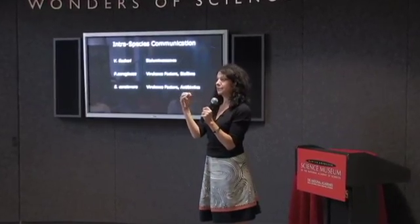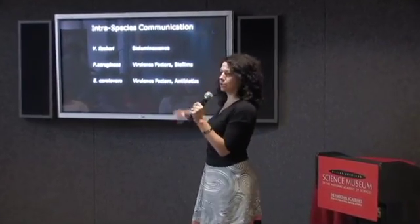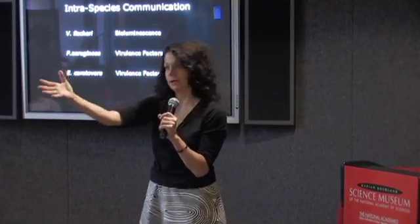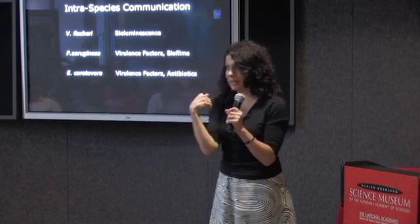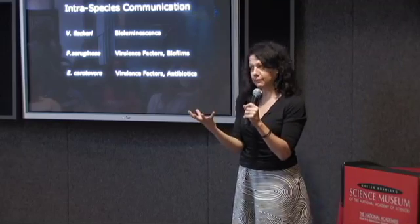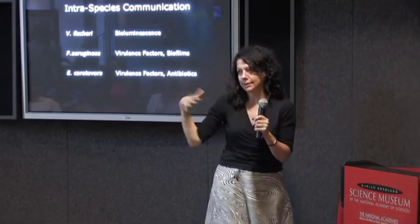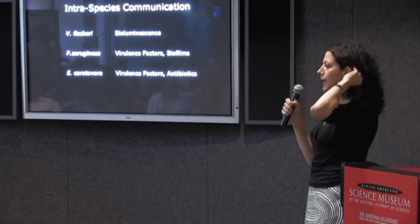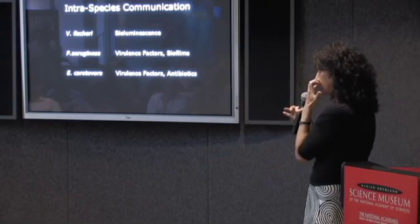All of the traits — at a first approximation — that are controlled by quorum sensing are the kinds of traits where you're giving something away that you can never get back, and you need neighbors to participate. If all the neighbors work together, then the behavior becomes effective. It's only with the collective action of the group that these behaviors can be successful. So quorum sensing controls behaviors that require lots of cells working in synchrony for the behavior to be functional.